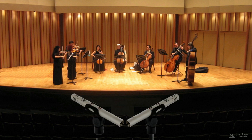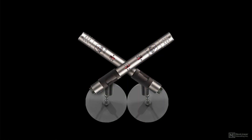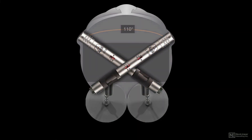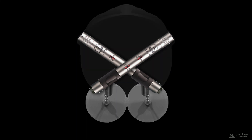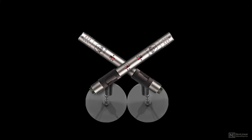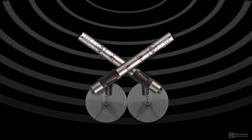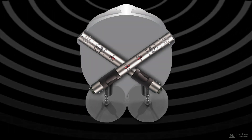One approach to stereo micing is to position the stereo pair approximately the same distance apart as human ears. This is referred to as near-coincident micing. Amplitude and timing of phase information is captured as it would be by our ears, with greater phase differences and higher frequencies for a very natural stereo sound field.